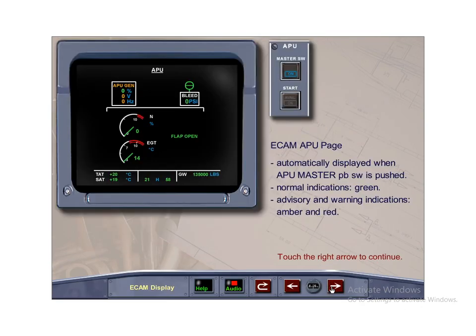The ECAM APU page is automatically displayed when the APU master push-button switch is pressed, while the aircraft is powered by an engine or an external power source, and remains displayed for approximately 15 seconds after the start cycle is complete. Normal indications are displayed in green. Advisory and warning indications are displayed in amber and red.